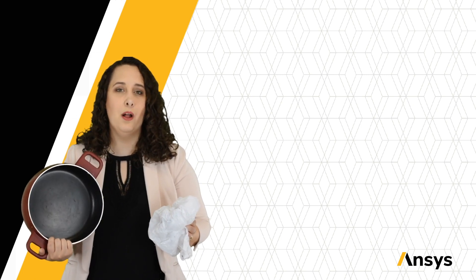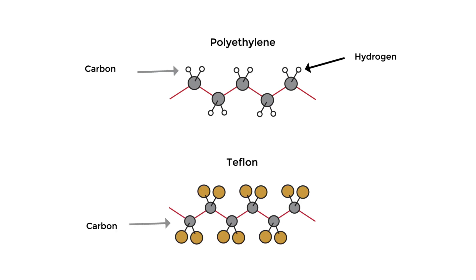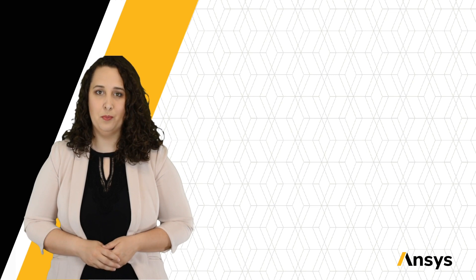But let's compare these two polymers atomically — they are actually quite similar. Polyethylene has a carbon backbone with hydrogen side groups repeating. Teflon has the same carbon backbone, but the hydrogen atoms have been replaced with fluorine atoms. Fluorine has a significantly different electronegativity than hydrogen. This, along with the density of polymer chains and some other factors, leads to this dramatic difference in properties and performance. But atomically, only one thing is really different — that's a pretty big impact for something so small.